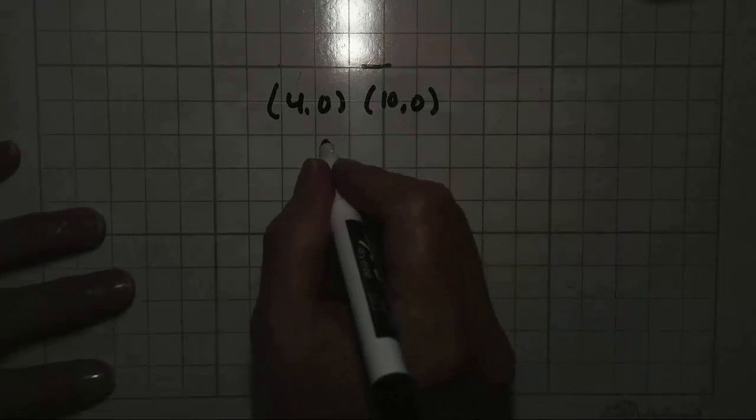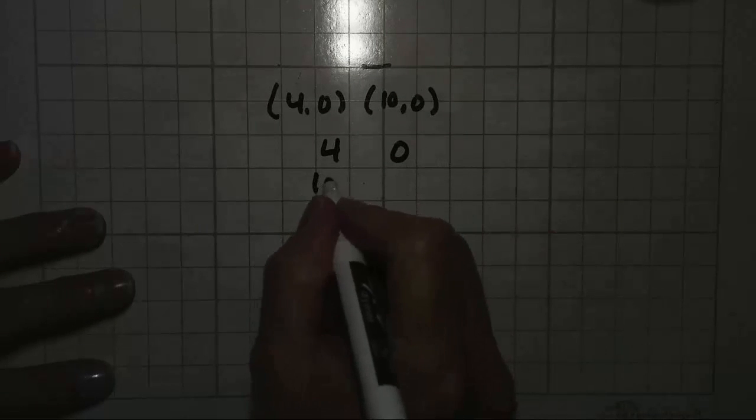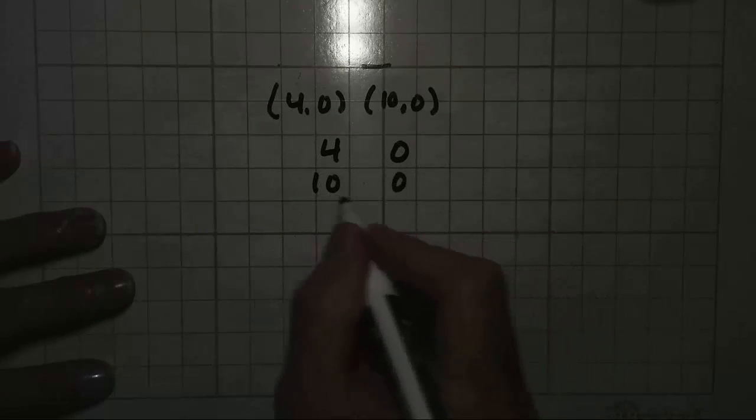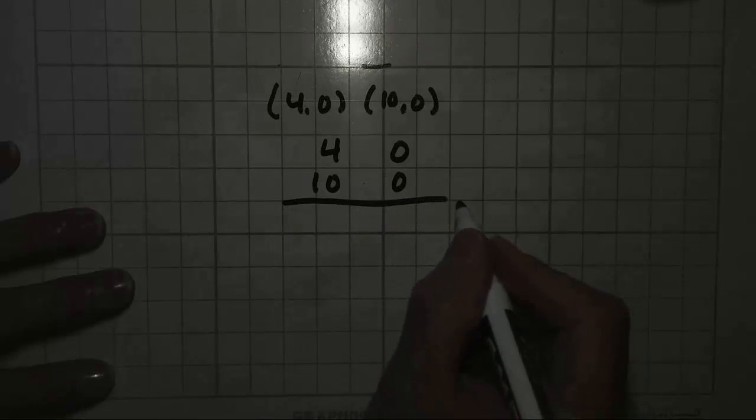it's much easier to do if you just take the first set of points, 4, 0, and underneath those write the second set of points, 10, 0. And then draw a big line like you're going to do a big addition problem because that's kind of what you're going to do.